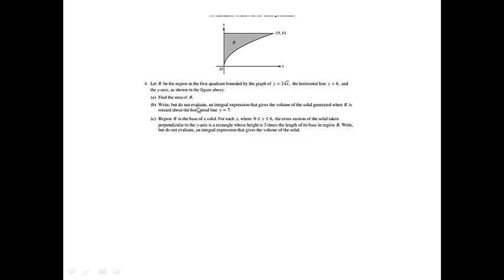Okay, problem four. Let R be the region in the first quadrant, bounded by the graph of y equals 2 times the square root of x, the horizontal line y equals 6, and the y-axis as shown in the figure above. I'm cheering because we're going to be doing some areas and volumes, and I love these types of problems because I know I can get some good points on them.